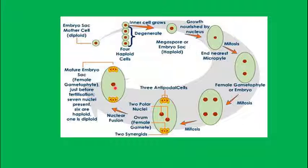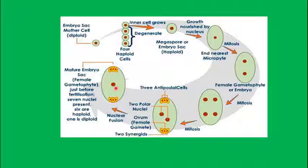Be very careful — questions will be asked on this. Just before fertilization, seven nuclei are present: six are haploid and the central one (formed by fusion of two polar nuclei) is diploid in nature.